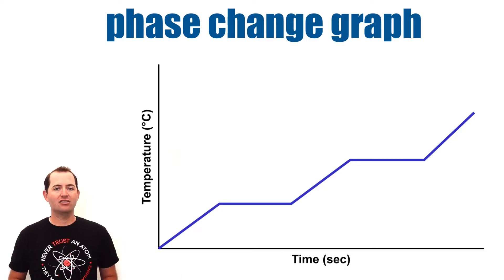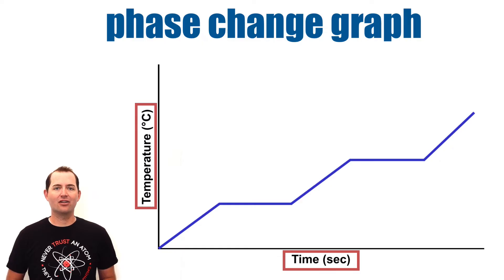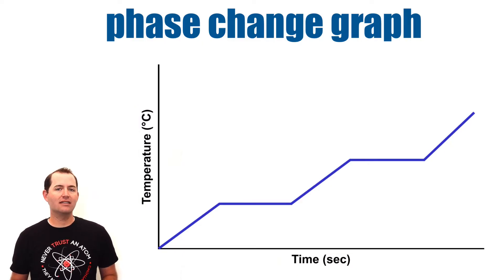These graphs show time on the horizontal axis and temperature of the substance on the vertical axis. Regardless of the substances represented on these graphs, all graphs share similarities.